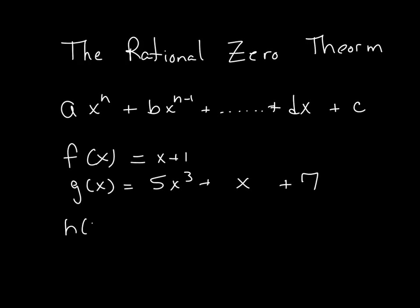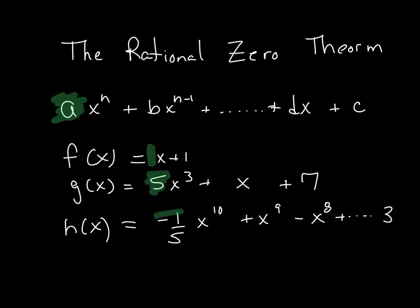Or even one more example: if h of x was negative 1/5 x to the 10th plus x to the 9th minus x to the 8th, all the way down with some terms. What matters with all of this is what is the coefficient of the leading term, meaning what is the number in front of the x with the highest degree, and what is the last term.